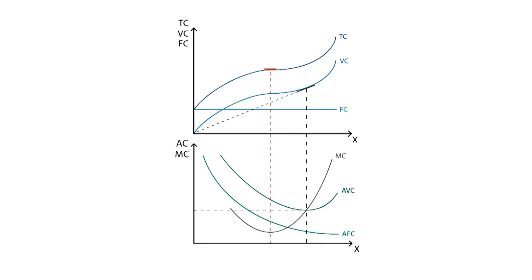We can use the same method in order to draw the average total cost, which is derived from the total cost curve. Its minimum point matches the point where the marginal cost curve crosses the average total cost curve.